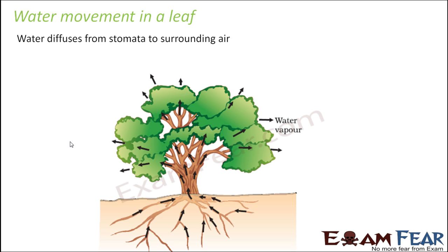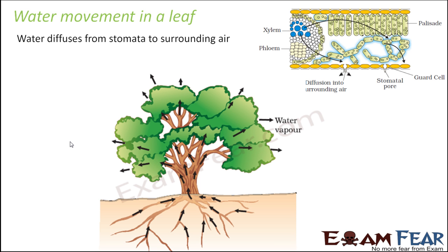In which part of the leaf does photosynthesis take place? Try to recall the internal structure of a dicot leaf. Here on the screen is how the internal structure looks. You have two layers of epidermis — one on the top side and one at the bottom — and in the middle you have the mesophyll layer. The mesophyll layer has two layers of cells: the palisade parenchyma and the spongy parenchyma. The spongy parenchyma has a lot of intercellular open spaces.